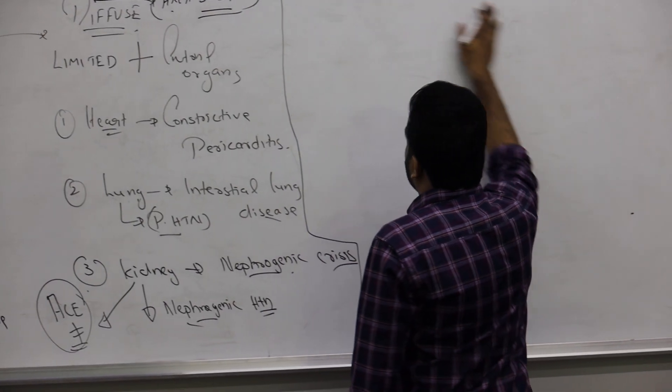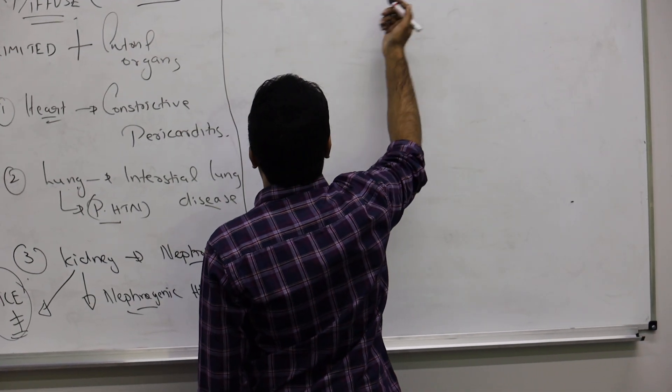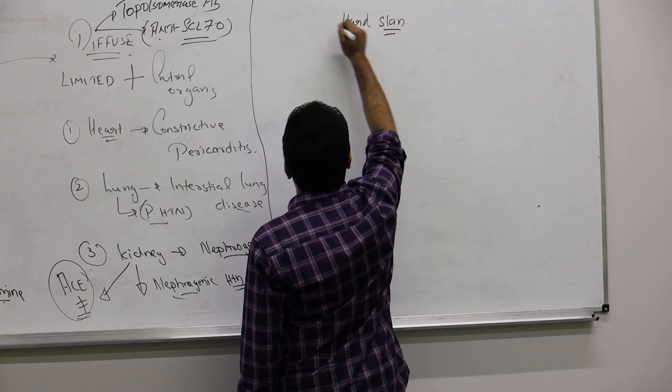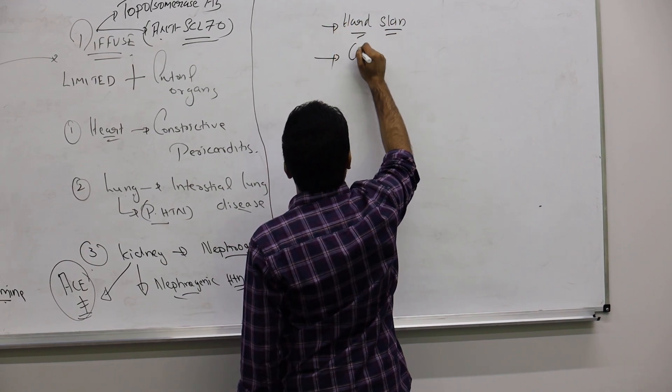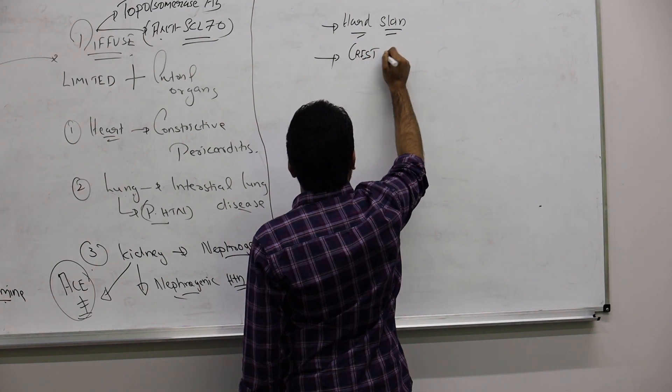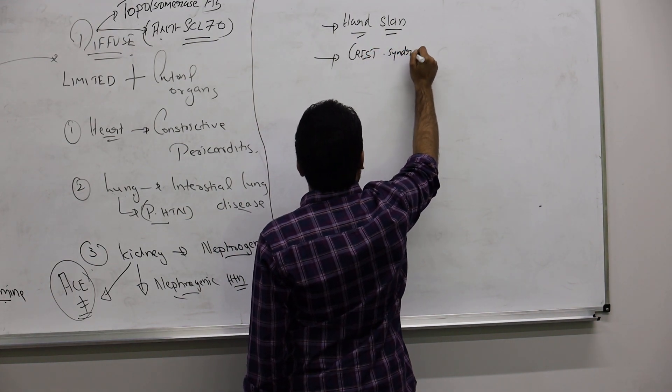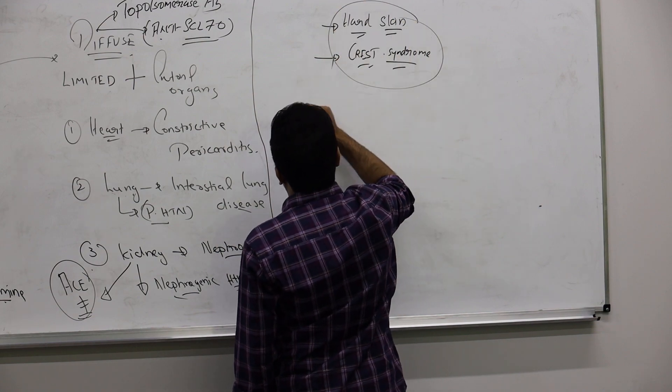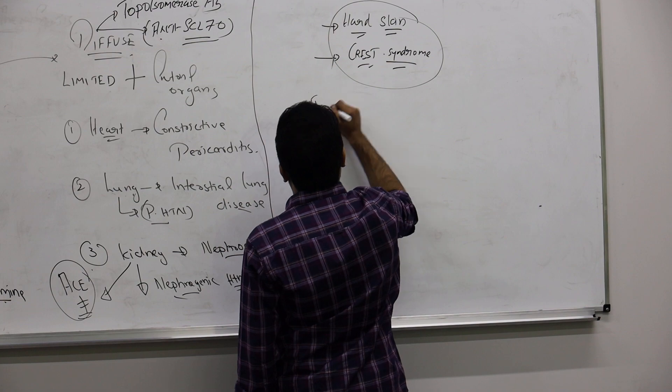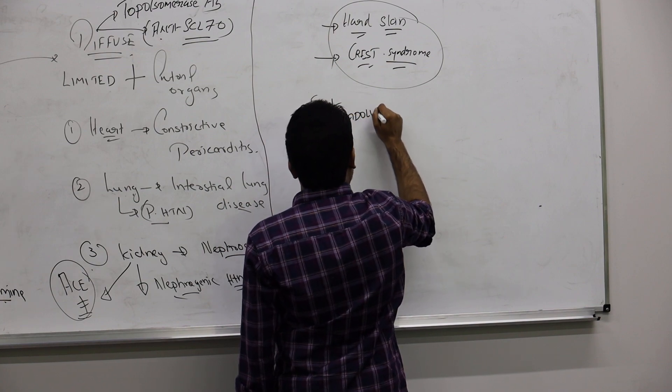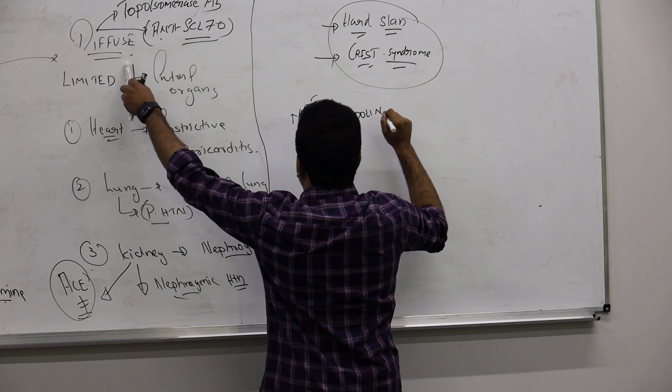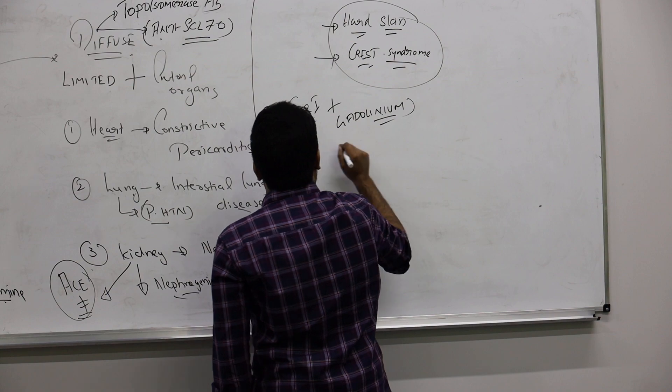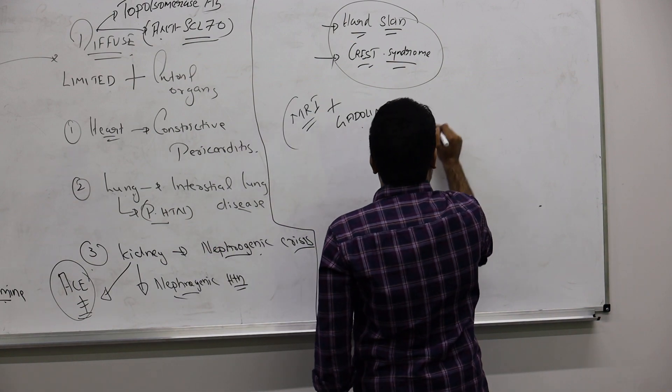Now there is a differential diagnosis. Someone has the same scenario like hard skin, they are having the CREST syndrome, everything like vasospasm, but they don't see any antibody. Instead they will give you history that someone underwent MRI with gadolinium contrast.